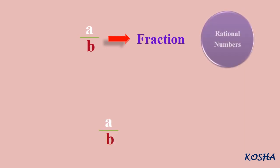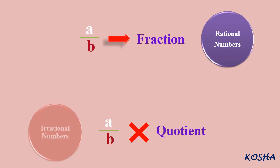There are numbers that cannot be expressed as the quotient of two integers. These are called irrational numbers.